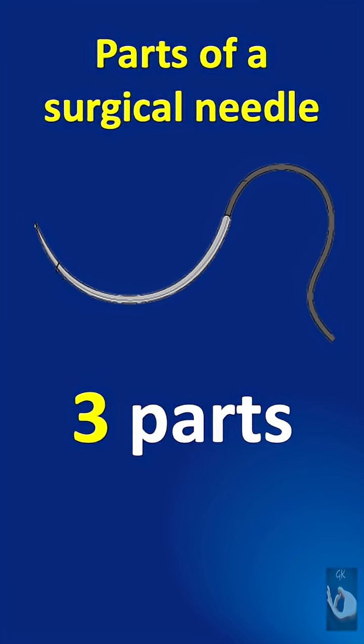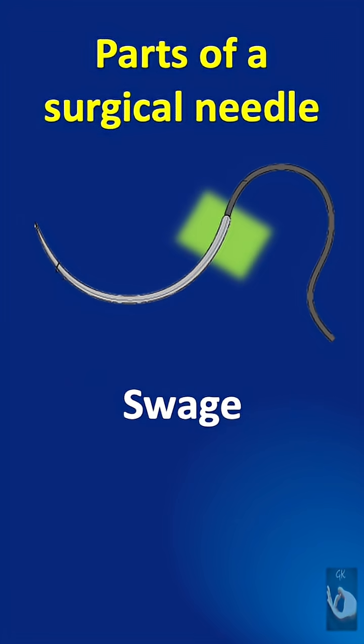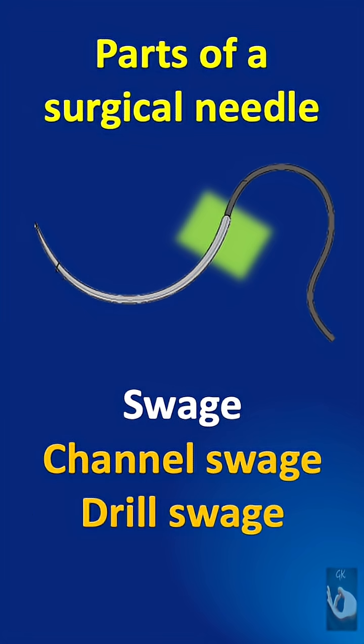Needles have three parts. The swage is the part where the suture material is attached to the needle. This could be a channel swage or a drill swage.